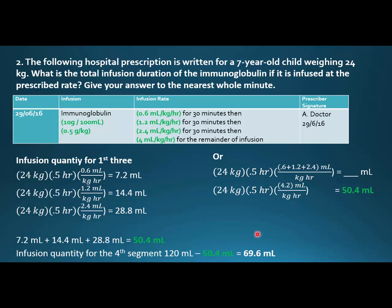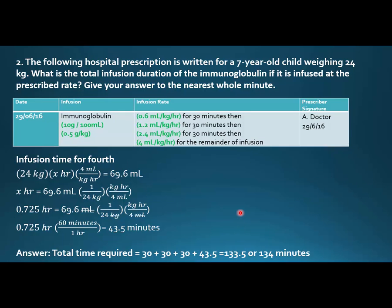But the question asks for the total infusion duration, not just the volume. Now that we've calculated 69.6mls, we can plug that in. Instead of knowing the time was 0.5 hours (30 minutes), we know the volume is 69.6mls. We rearrange: moving 24 to give 1 over 24, and moving the 4 under kilograms per hour. This calculation gives us 0.725 hours. Then 0.725 hours times 60 minutes per hour equals 43.5 minutes.